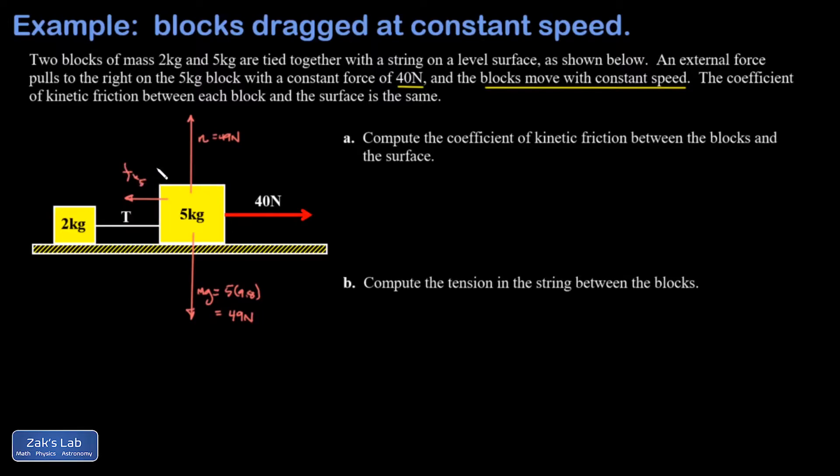We do the same thing for the 2 kilogram mass. The force of gravity comes out to 19.6 newtons. Here again, the normal force is going to be equal to the downward force of gravity because nothing else is happening in the vertical direction, so those forces must balance. I have an unknown friction force again pointing to the left and I'll call that fk2.